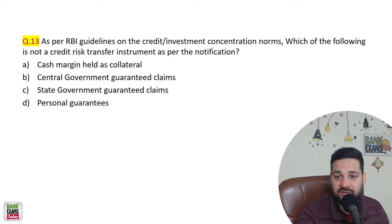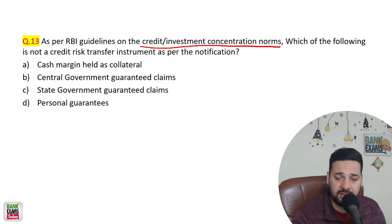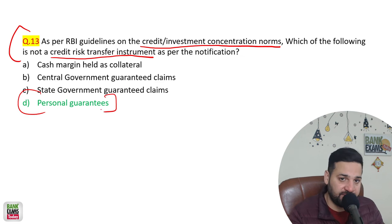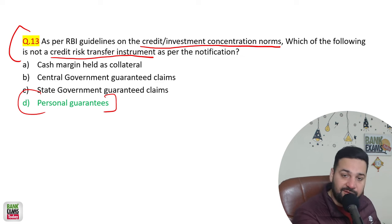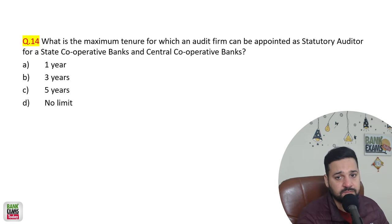As per the RBI guidelines on credit and investment concentration limits — I hope you are aware of the large exposure framework for NBFCs: upper layer, middle layer, and base layer. Credit and investment concentration norms apply here. Which of the following is NOT a credit risk transfer instrument? Personal guarantee. Credit risk transfer instruments — such as cash, central government guarantees, and state government guarantees — allow NBFCs to transfer their credit default risk so they can lend more.